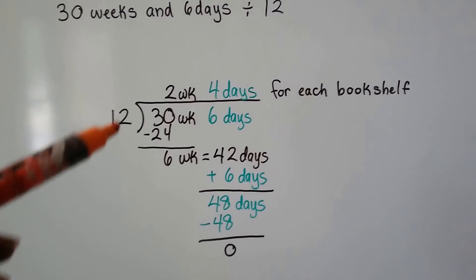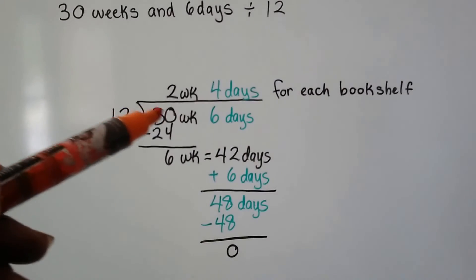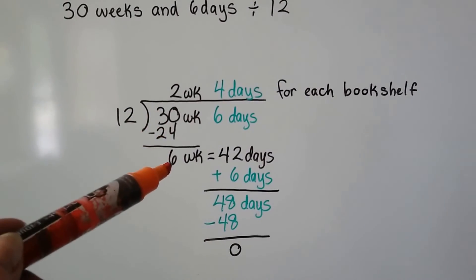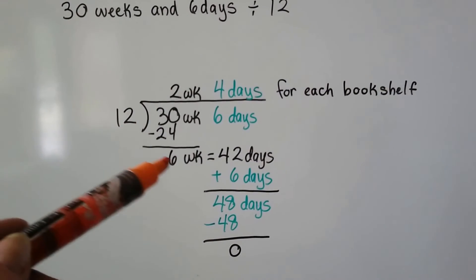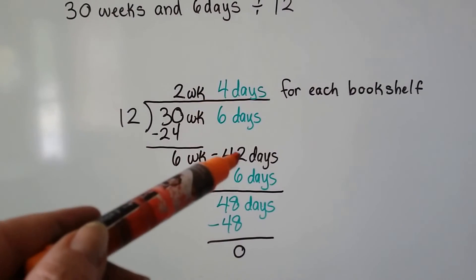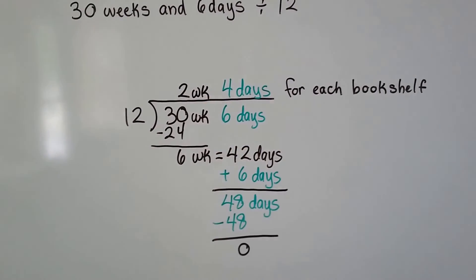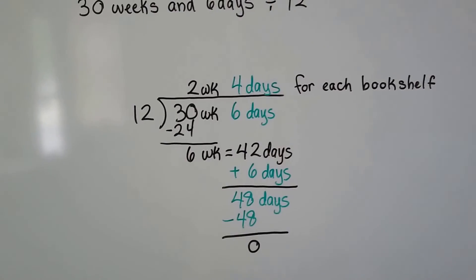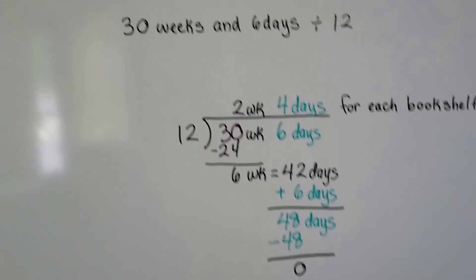So just remember, as you're putting this divisor into the dividend and subtracting, after you multiply and you subtract and you get that amount, you have to convert this amount to that smaller amount and then add them. That's the biggest thing to remember from this.